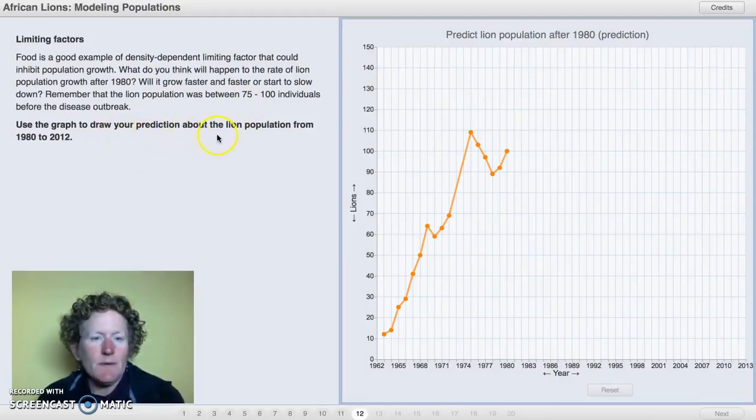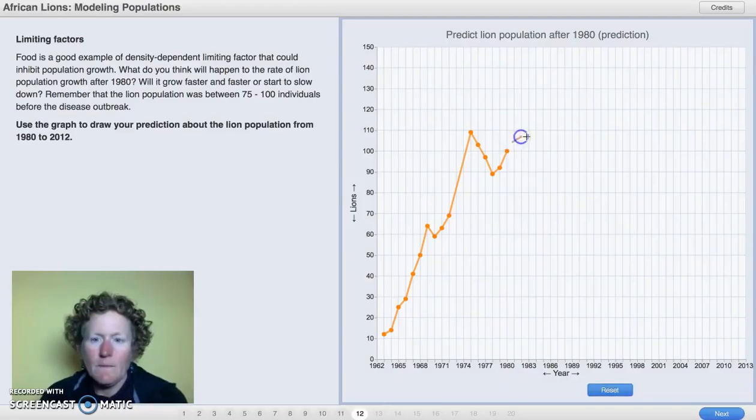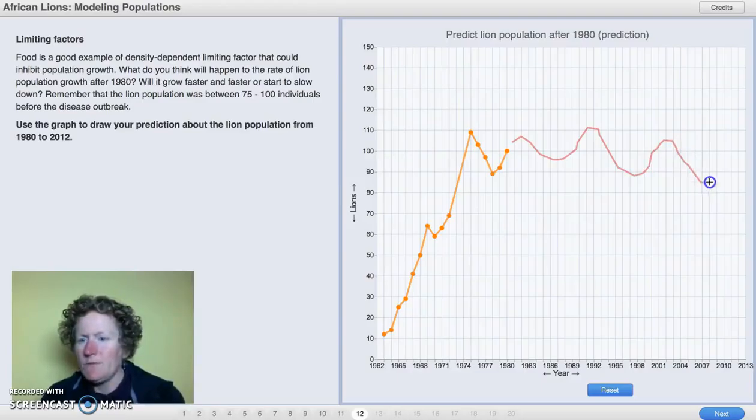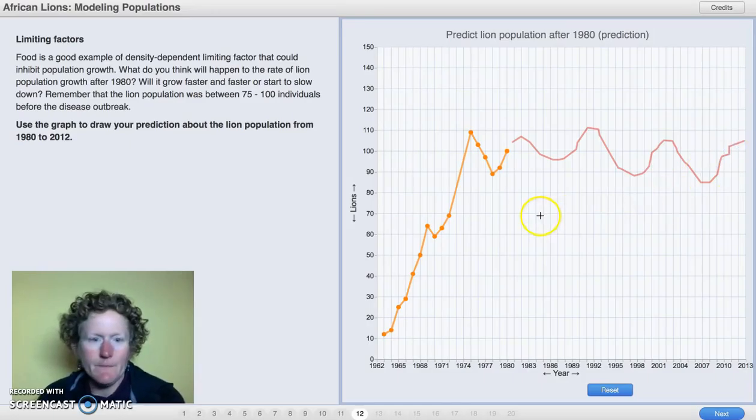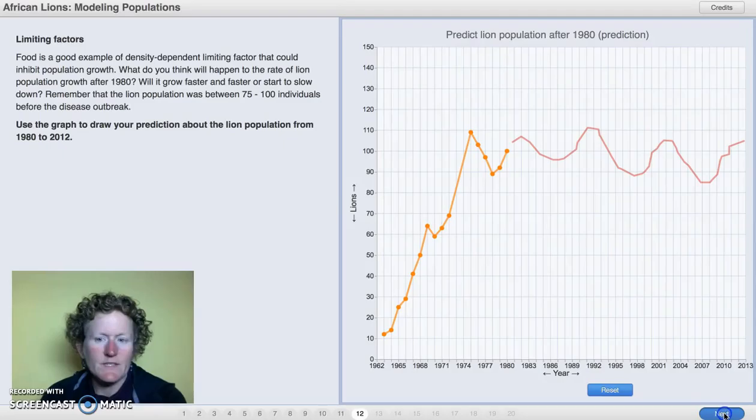Use the graph to draw your prediction about the lion population from 1980 to 2012. I think that 75 to 100 is going to be the carrying capacity. So the lion population is going to fluctuate, but it's always going to come kind of between 75 and 100. So it might do something like this. Let's check.